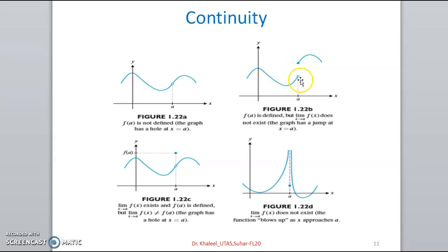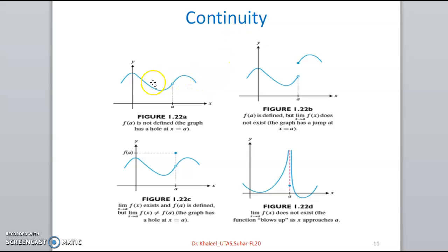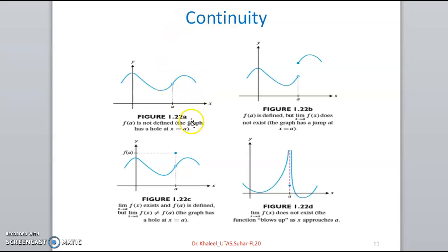To summarize: in the first case, f(a) is not defined but the limit exists. In the second case, f(a) is defined but the limit doesn't exist because the one-sided limits differ. In the third case, the limit exists and f(a) is defined but they are different. In the fourth case, the limit does not exist at all. These are all examples of discontinuity — these four graphs are not continuous at x equal to a.